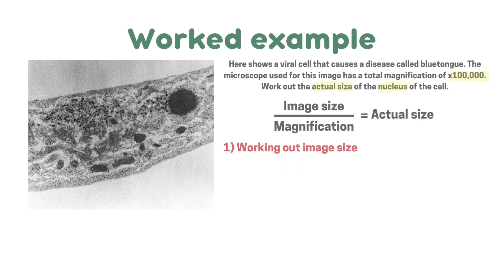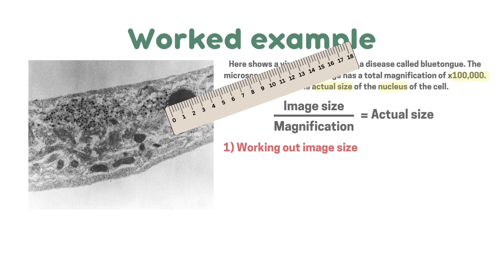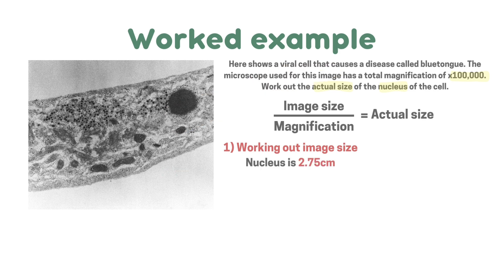First of all we're going to be working out the image size of the nucleus. We need a ruler for this. Here the nucleus is 2.75 centimetres long. Now next we work out the actual size. Image size divided by magnification is the actual size. So we know the image size is 2.75 centimetres and we're going to divide it by the magnification which is a hundred thousand. And 2.75 divided by a hundred thousand is 0.00000275 centimetres.